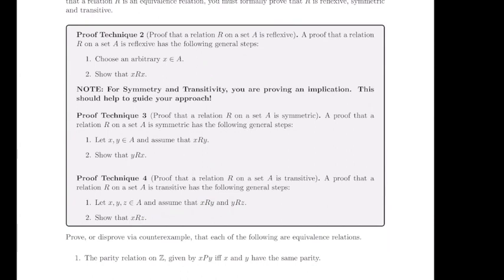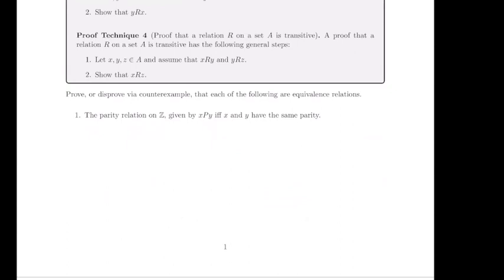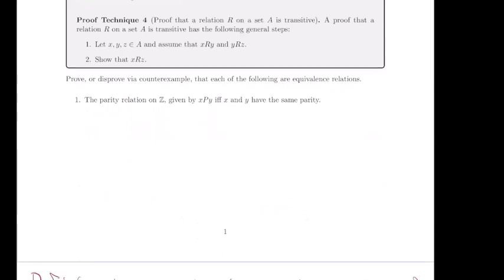Before we get started with the first example, any questions, either general about the course or specific to this material? So let's take a look at how these go. We've done a lot of these proofs last time when we were looking at different relations and asking: is it reflexive, symmetric, transitive? I just want to formalize that process. Let's consider this parity relationship. The set we're working with is the integers, and two integers are related by P if they have the same parity — both even or both odd.